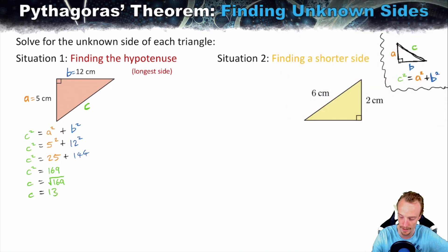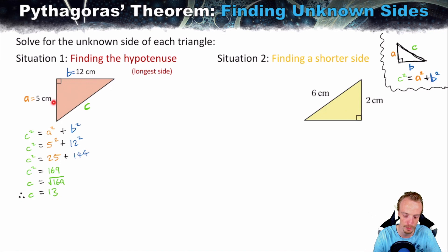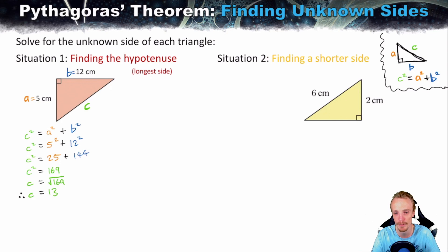That's the step-by-step process for finding the hypotenuse of a right angle triangle when you know the two shorter side lengths. As long as you follow this step-by-step process, you'll be able to find the hypotenuse every single time.